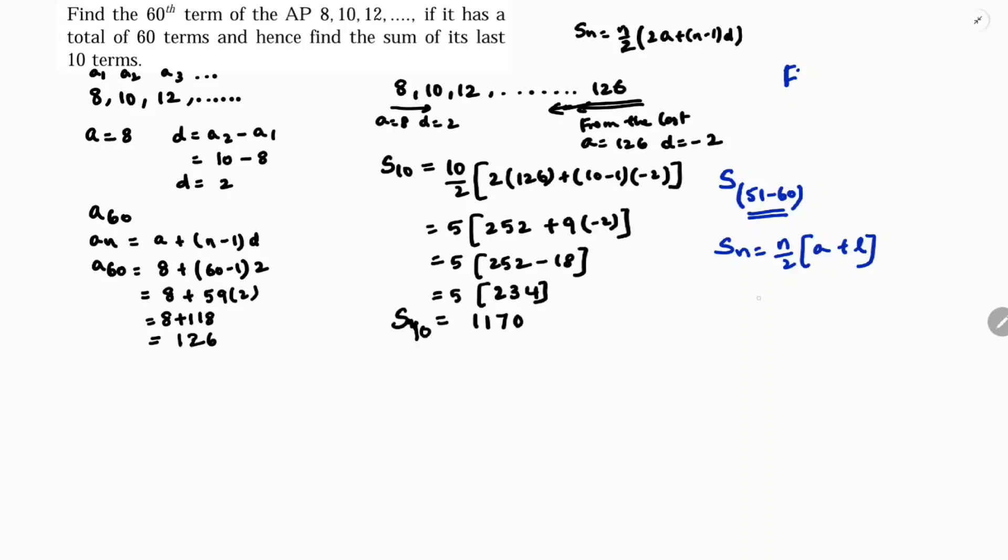Here N is 10 terms. 10 by 2, A is the 51st term and the last term is the 60th term. So 5 times A51. I will find A51. A51 is A plus 51 minus 1 into D, which is A plus 50D. A is 8, 50 times 2, so 8 plus 100 which is 108.